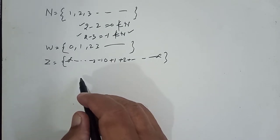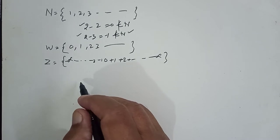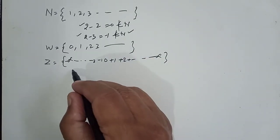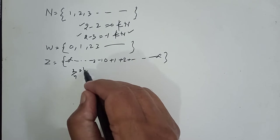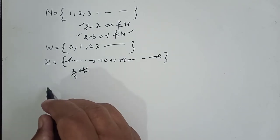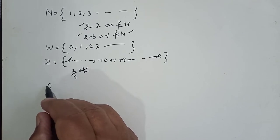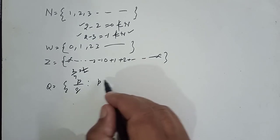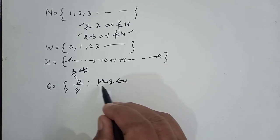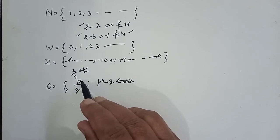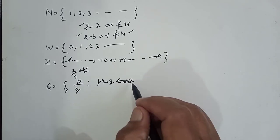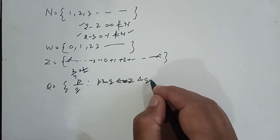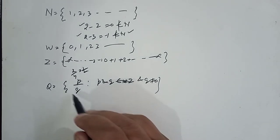Similarly, this also has a deficiency. The question arises: what happens when we divide a number by another number? For example, 2 by 4 is 1 by 2. This is not a perfect integer. So we define rational numbers as Q, defined as P upon Q, such that P and Q belong to Z — that is, the numerator and denominator belong to the set of integers — and Q is not equal to 0, because if Q equals 0, this becomes infinitely meaningless.